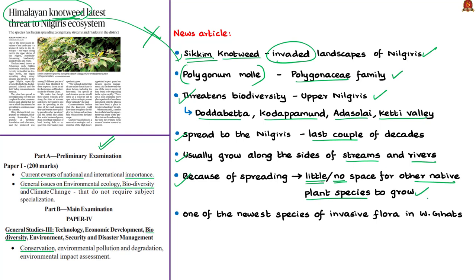This knotweed is among 27 different species of invasive flora identified in the Western Ghats and is one of the newest species found to be rapidly expanding in that region. They pose a threat to native landscapes and biodiversity in the Western Ghats. Conservationists believe the knotweed could have been brought to the Nilgiris by visitors and accidentally released into the landscape.